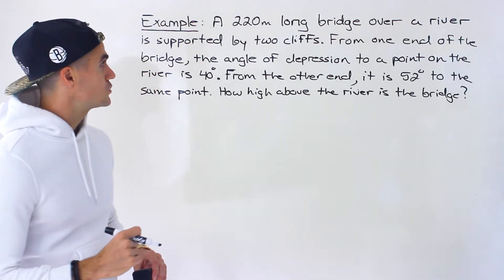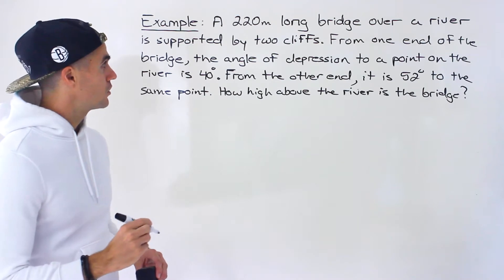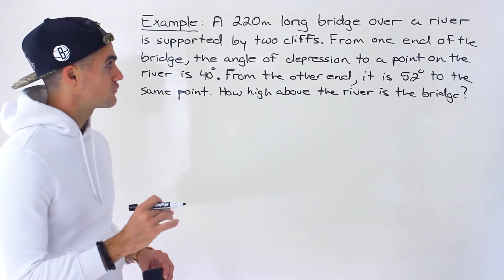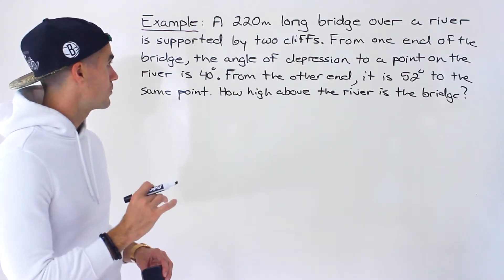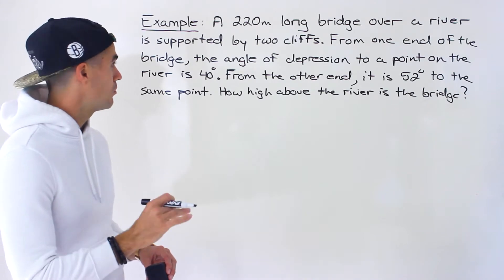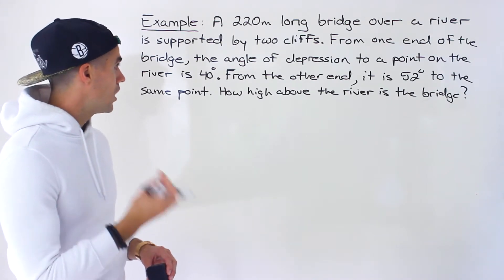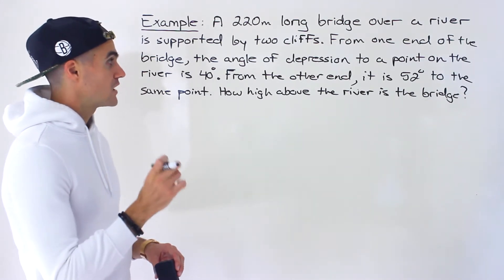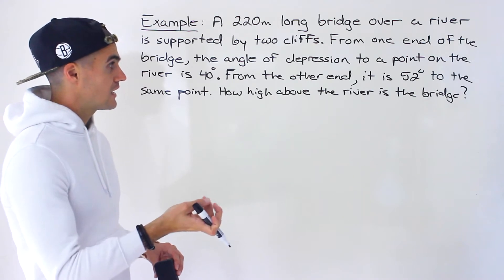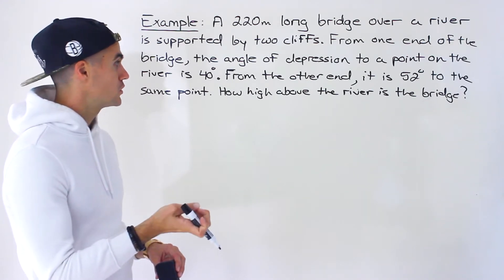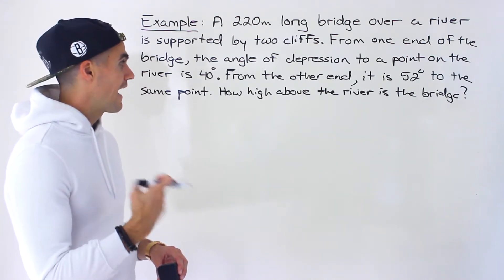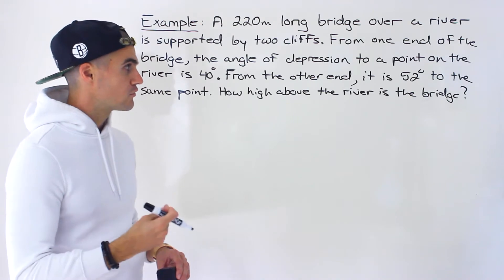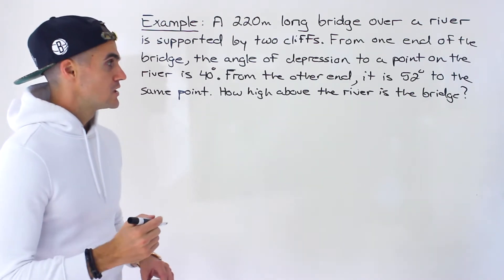So: a 220-meter long bridge over a river is supported by two cliffs. From one end of the bridge, the angle of depression to a point on the river is 40 degrees. From the other end, it is 52 degrees to the same point. How high above the river is the bridge?